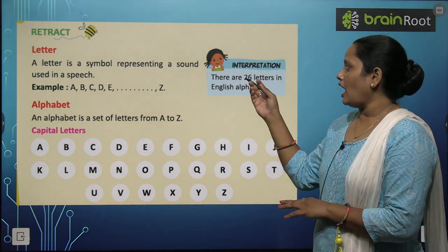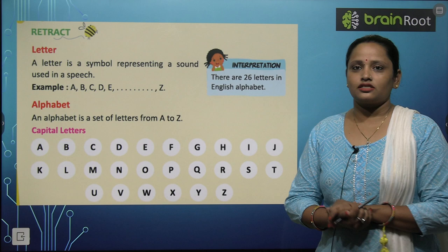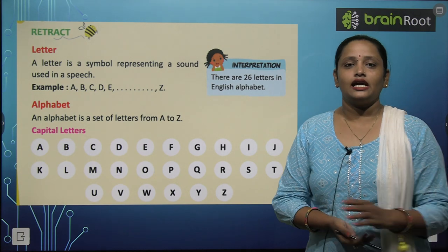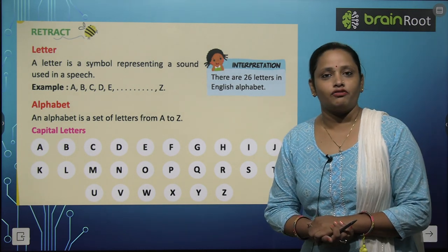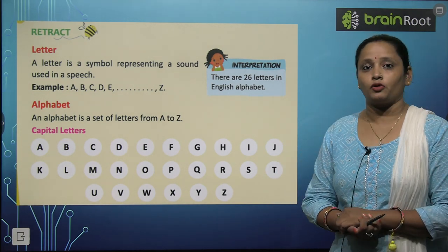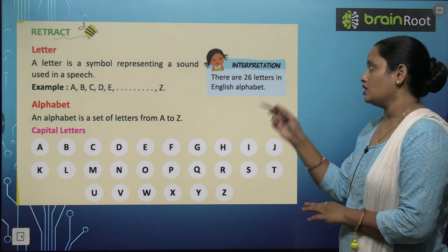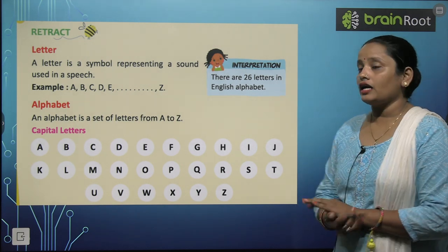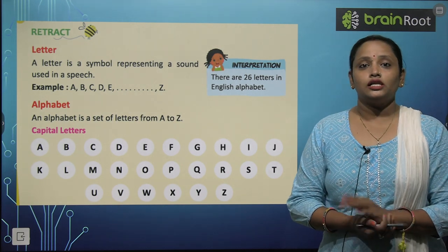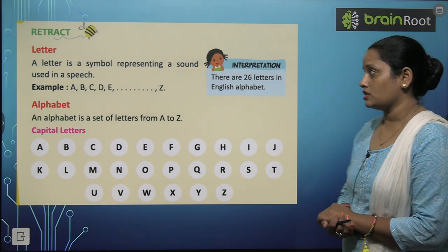There are 26 letters in the English alphabet. Toh English alphabet mein aapko pata hai kitne letters hote hain? So there are total 26 letters.